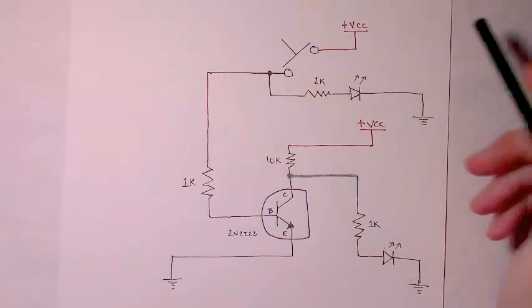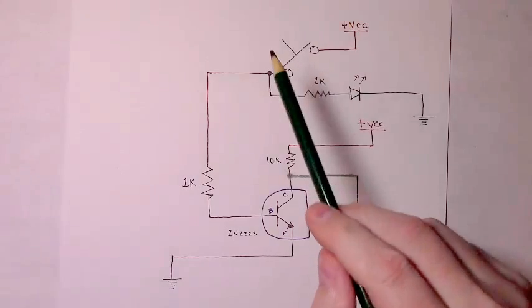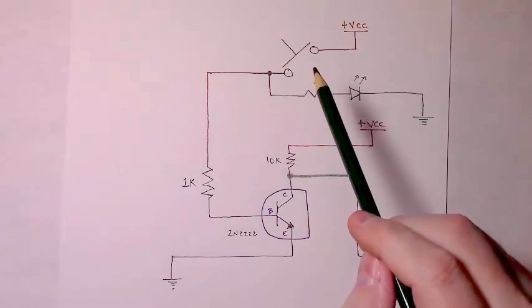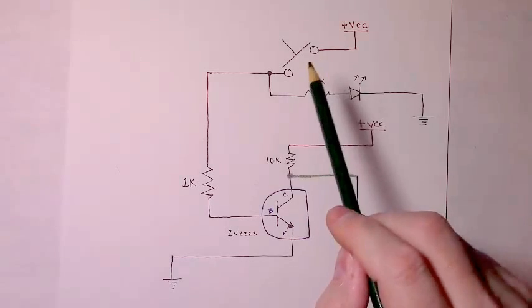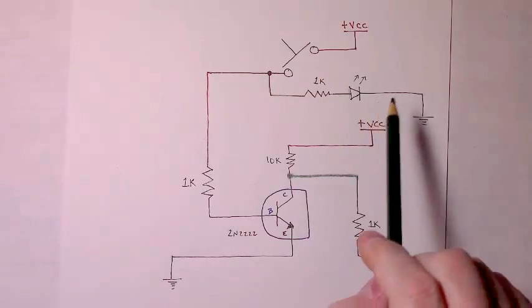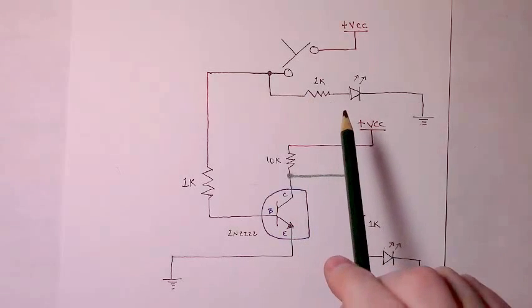The schematic we'll be using is fairly straightforward. We'll have our input to our NOT gate controlled by a single normally open momentary button. And off of that normally open momentary button, we'll have an indicator LED, a resistor, and an LED to indicate what is the current state of our input.